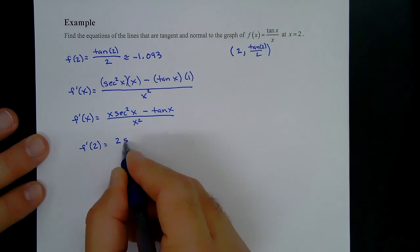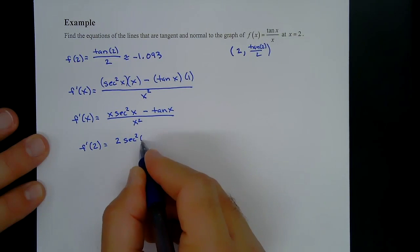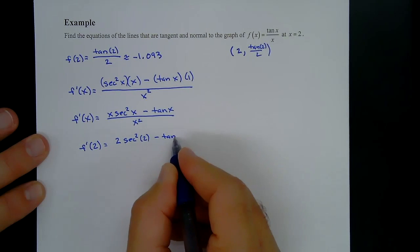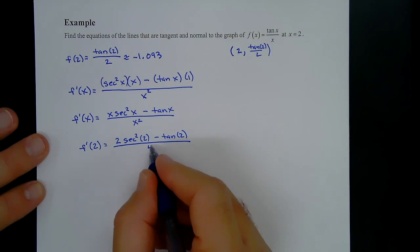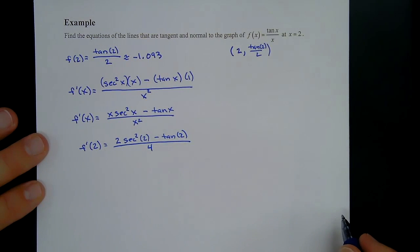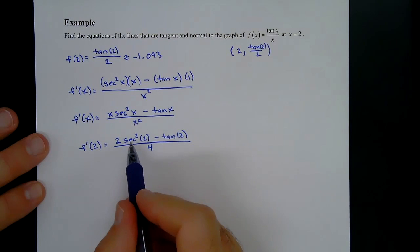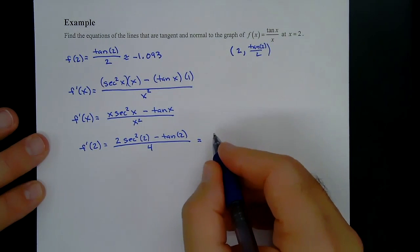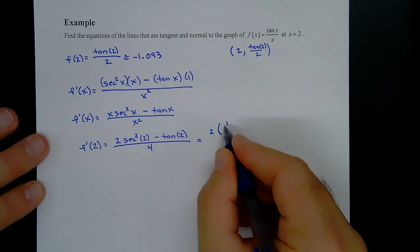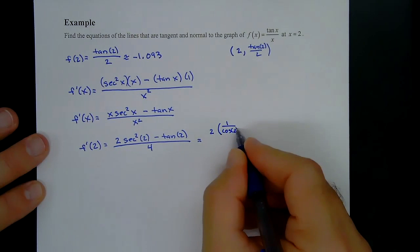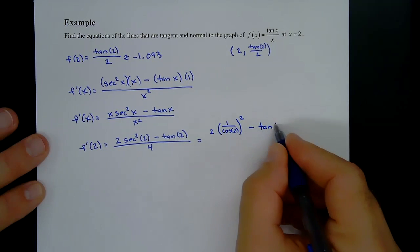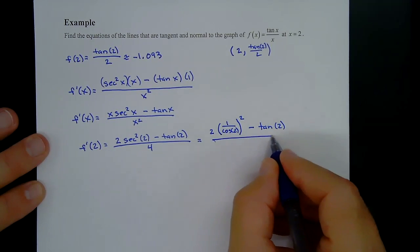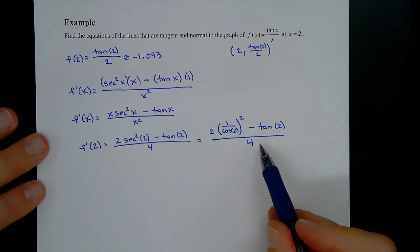Since graphing calculators don't have a secant button, we rewrite: sec(x) = 1/cos(x), so f′(2) = [2·(1/cos(2))² − tan(2)] / 4. We enter this into the calculator and compute the result.